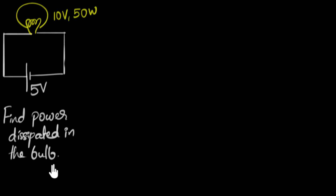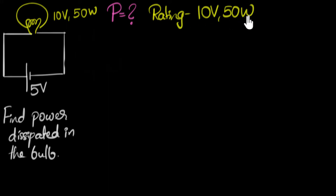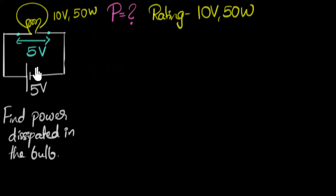Let's do this step by step. The first step to solving any problem is to write down what is asked of us — we are asked to calculate the power dissipated in the bulb. The next step is to write down what is given to us. We are given the rating: 10 volt, 50 watt. And we're also given the voltage across it is five volts, so the voltage across the bulb is going to be five volts, because the voltage across these two points is the same as the voltage across these two points.